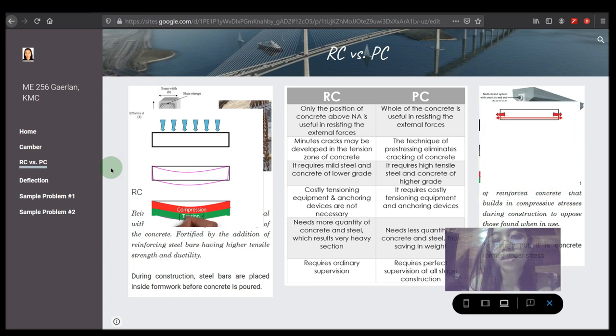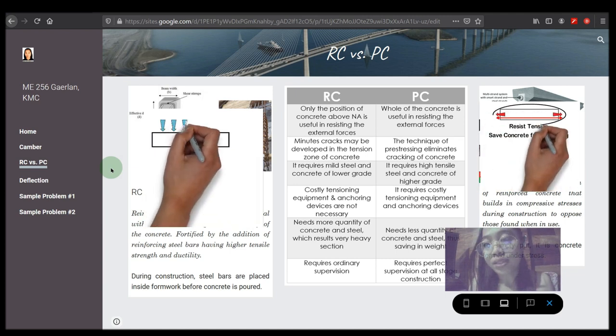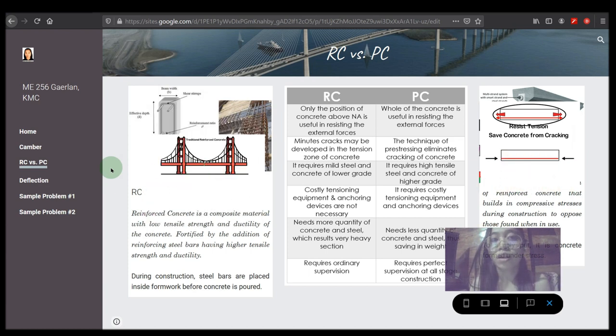In RC, it requires mild steel and concrete of lower grade. In PC, it requires high tensile steel and concrete of higher grade. So there's a difference there.